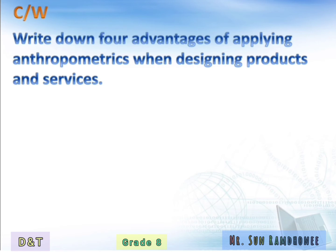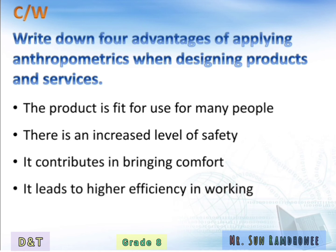This classwork asks you to write down four advantages of applying anthropometrics when designing products and services. First, the product is fit for use for many people — such as a car, it has to be fit for many people. Second, there is an increased level of safety — when you use a shoe adapted for your feet, you feel comfortable as well as safe. Third, it contributes to bringing comfort. Fourth, it leads to higher efficiency in working — when anthropometric data is considered when designing a keyboard, the person is going to type more efficiently.